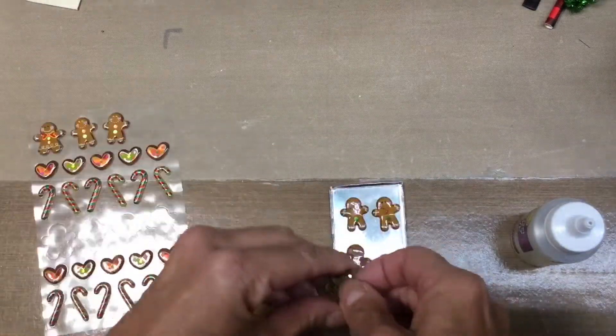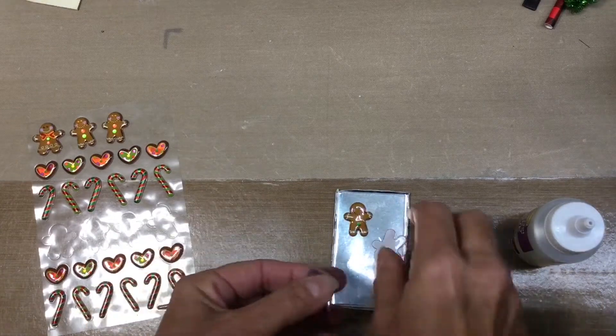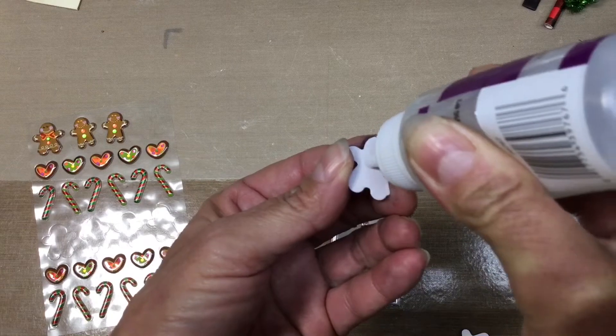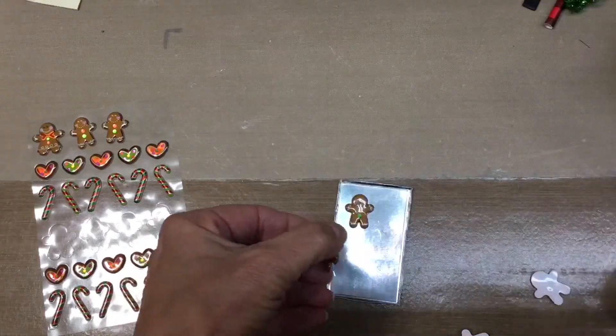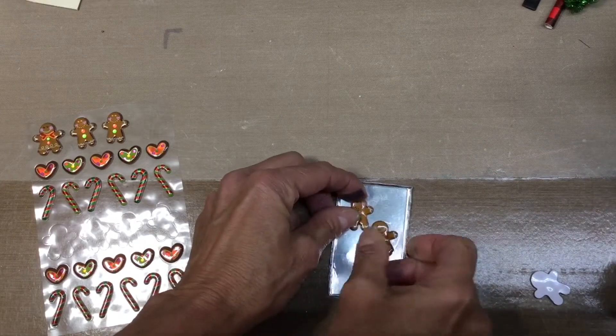So we're almost done here. And I am re-gluing them just to make sure that they're really stuck on there, because it is a metallic paper and there is a sheen to it. So your sticker may not stick as well. So I'm just reinforcing the glue on here.